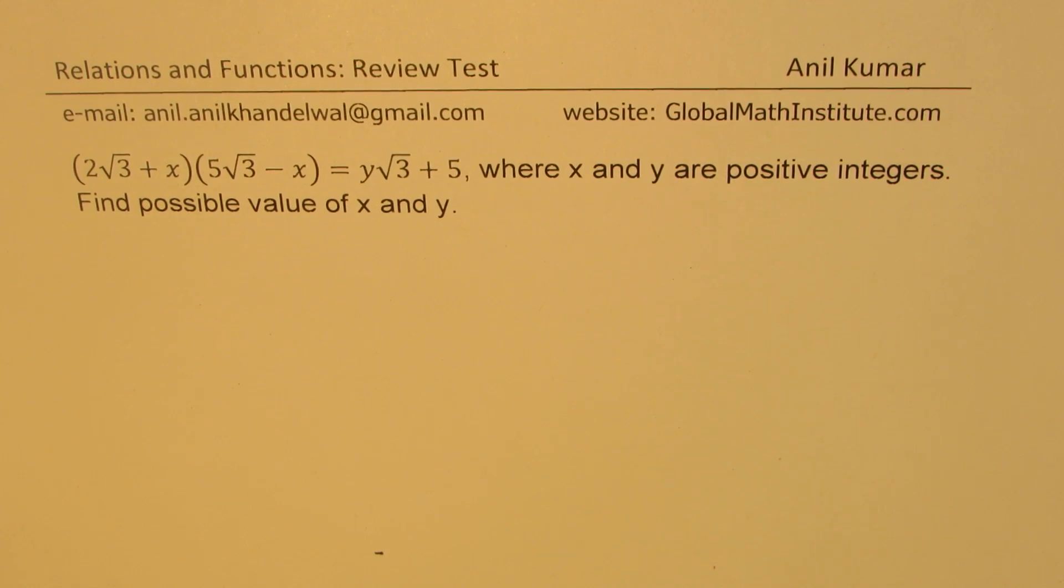Now here is a request from one of our subscribers in England who is preparing for Cambridge International exams. The question here is 2√3 + x times 5√3 - x equals to y√3 + 5, where x and y are positive integers. Find possible value of x and y. I would like you to pause the video, answer this question and then look into my suggestions.